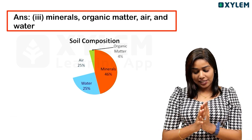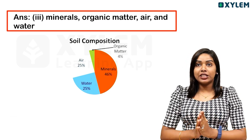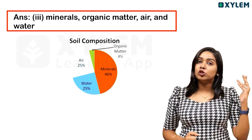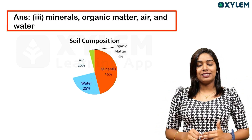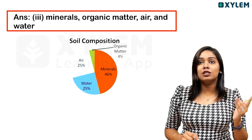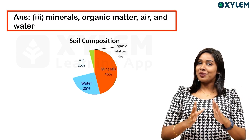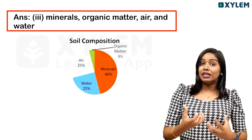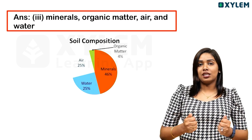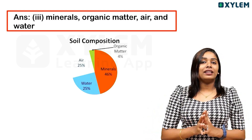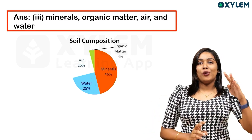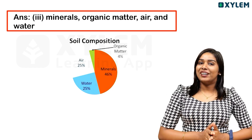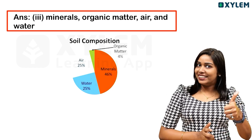How many percent of each component? Air is 25%, water is 25%, minerals 46% remaining, organic matter — plants and animals — 1% to 3%, so about 4%. Done? Clear? Next, you will do it.